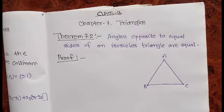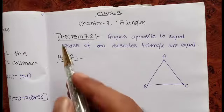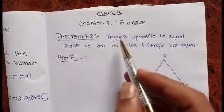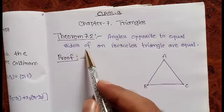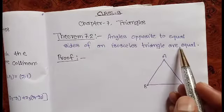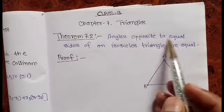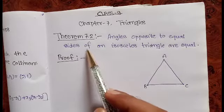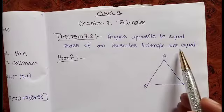Good morning students. In this video we will discuss Theorem 7.2: Angles opposite to equal sides of an isosceles triangle are equal.